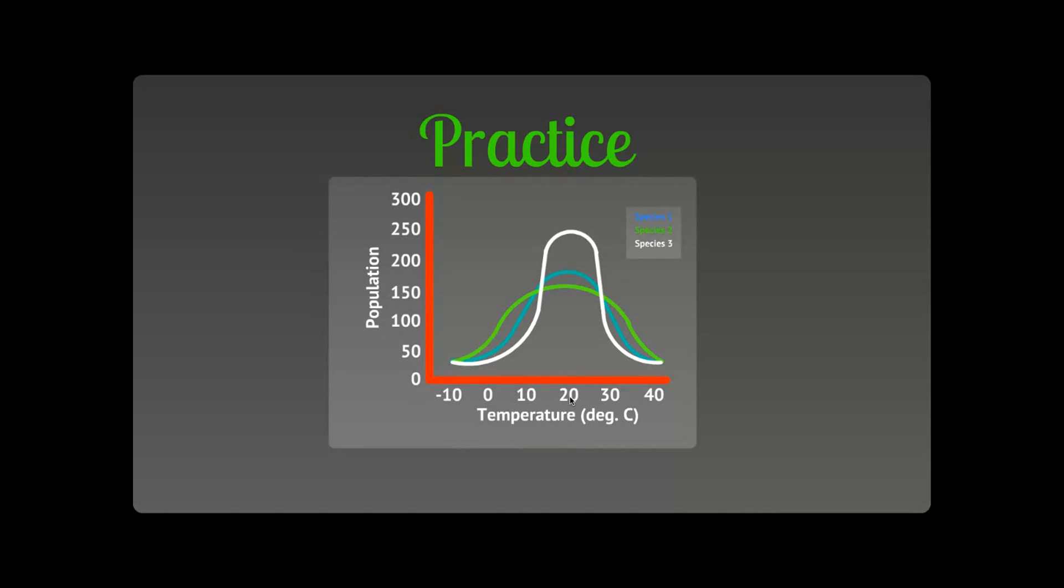And then I might ask you questions on a test like, what is the population of species one at 20 degrees? So species one is in blue. We're at 20 degrees - what's my population? It's about 150, 200, 175, somewhere around there. Or what's the population of species three at zero degrees? It's about 50. So you definitely need to be able to read these graphs as well as analyze them for which species can tolerate which conditions better.